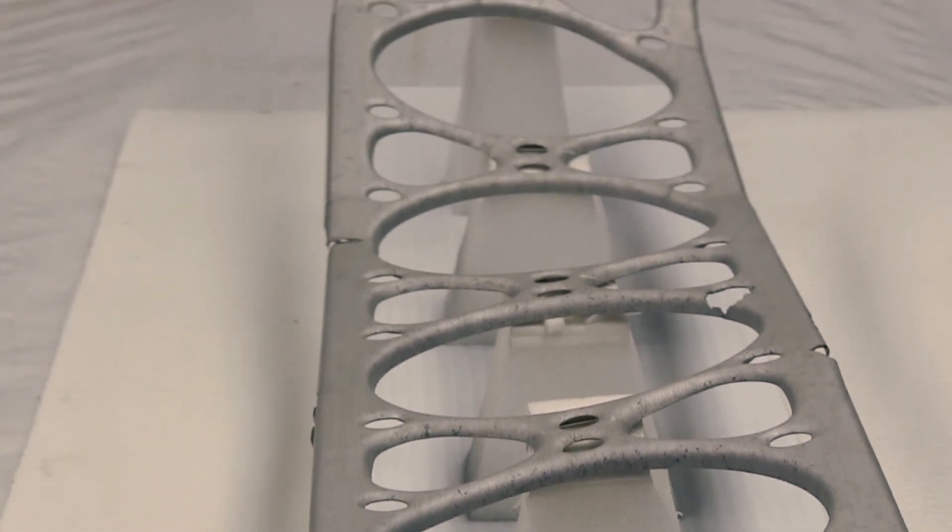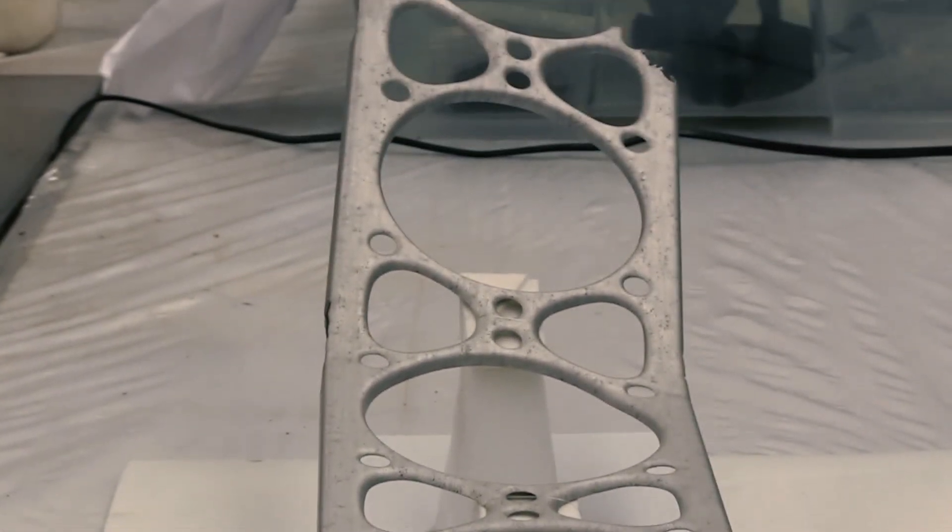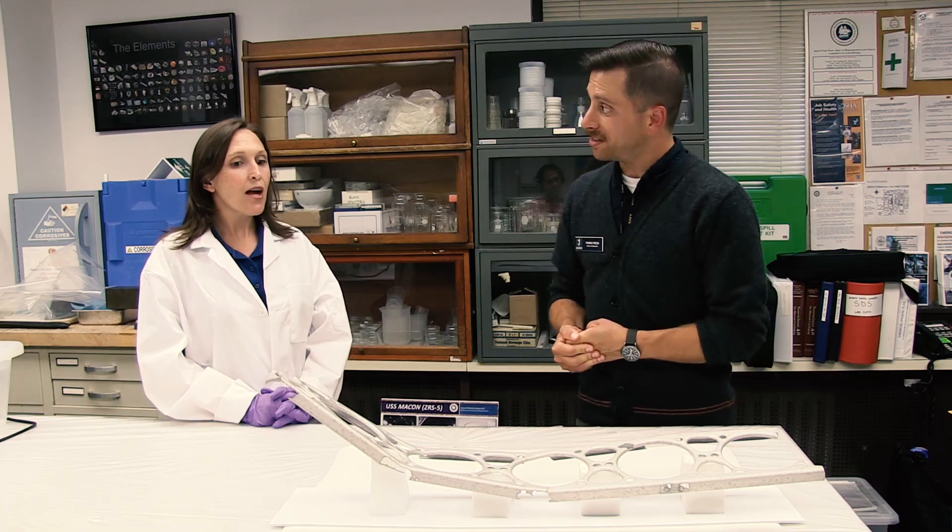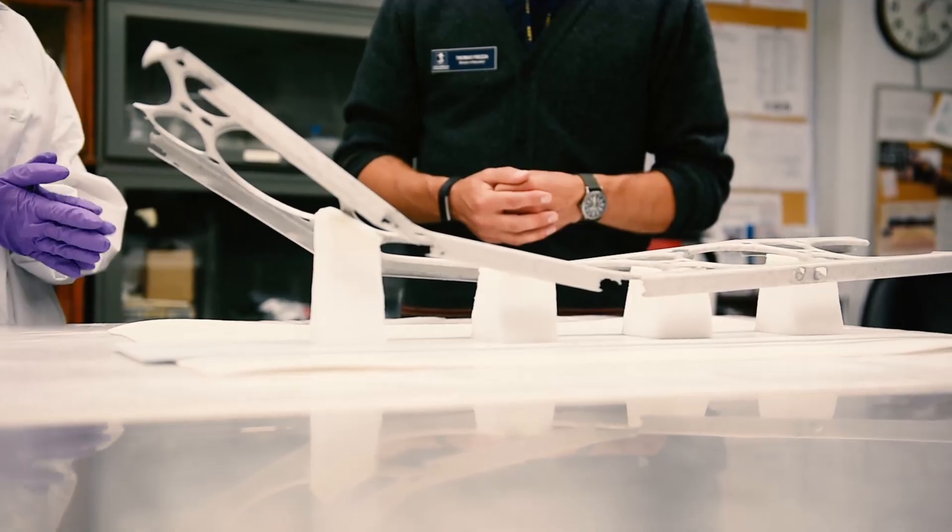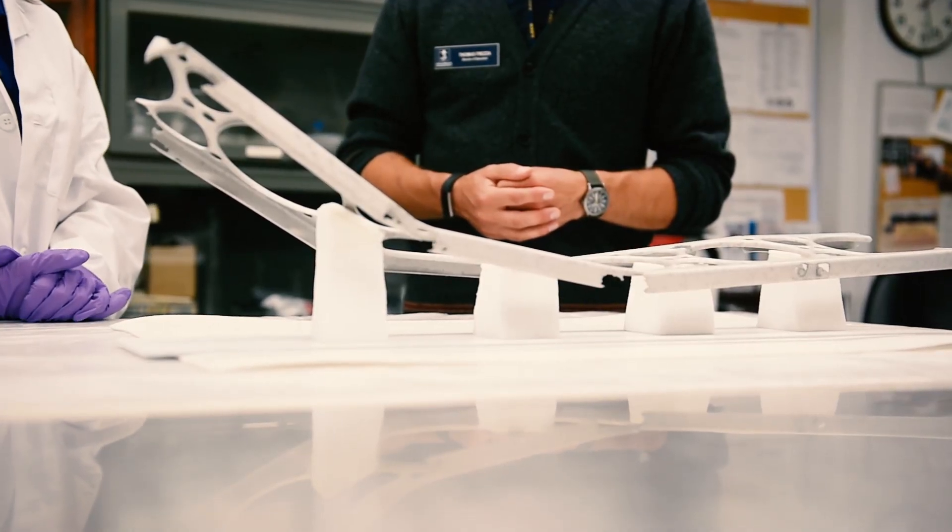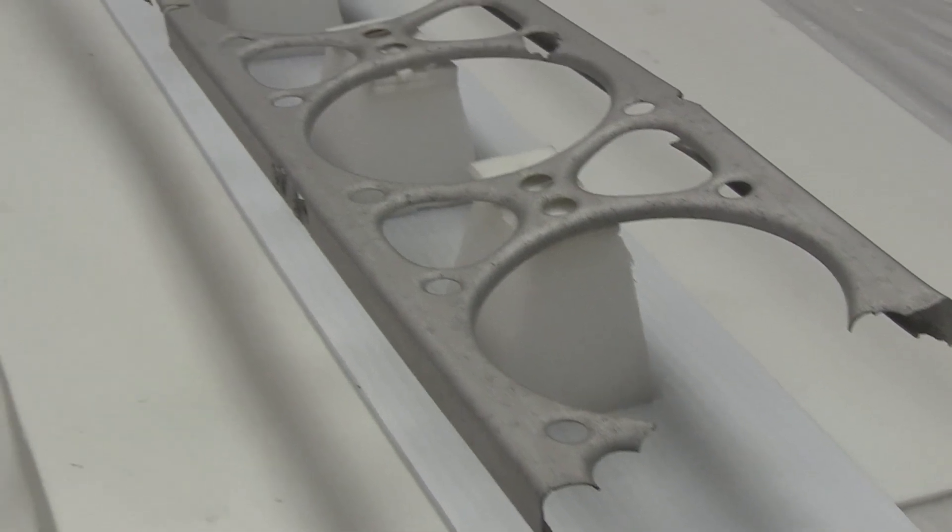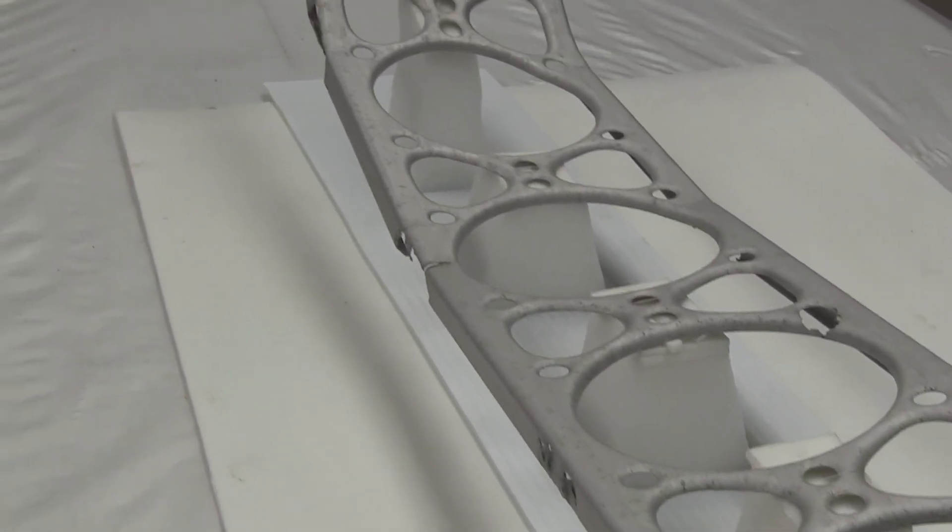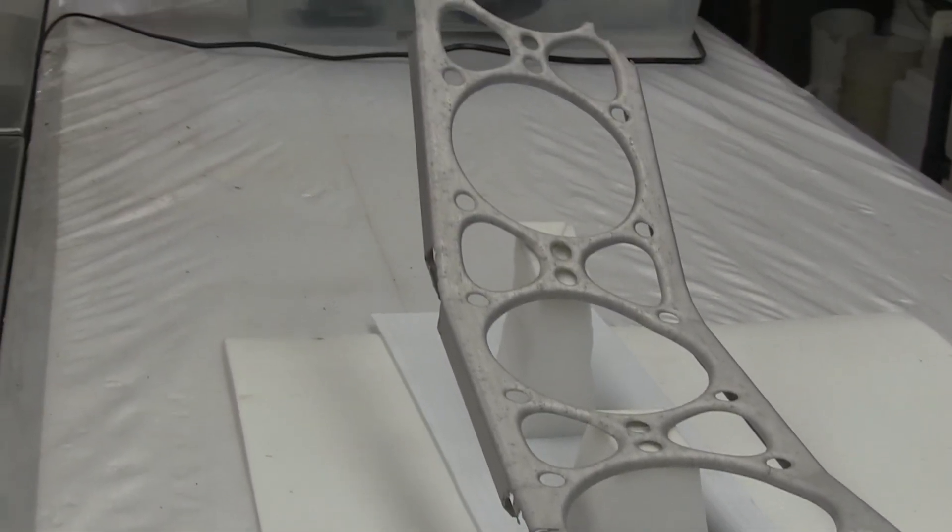So we have this really interesting artifact in front of us today. What can you tell us about this? This is actually a very unique artifact. It is actually a structural piece from the USS Macon, which was a rigid airship that was a program during the 1930s.